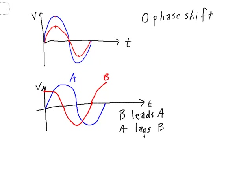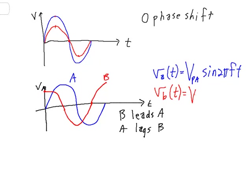And to write this out mathematically, if we have the equation for A, voltage of A as it changes over time is going to be equal to the peak voltage of A times sine of 2πFt. And the equation for B, to show that B is leading A by a certain amount, the peak of B times sine of 2πFt, but there's one more factor we want to take into account, the fact that A is leading B.